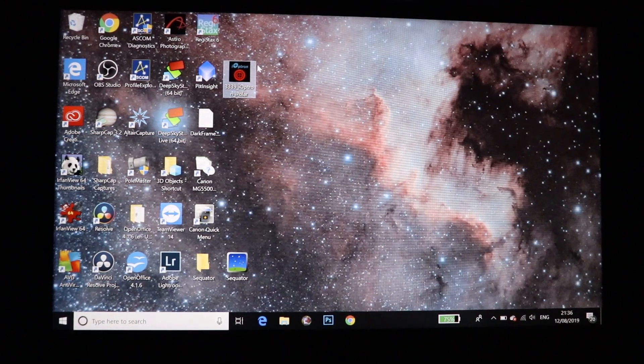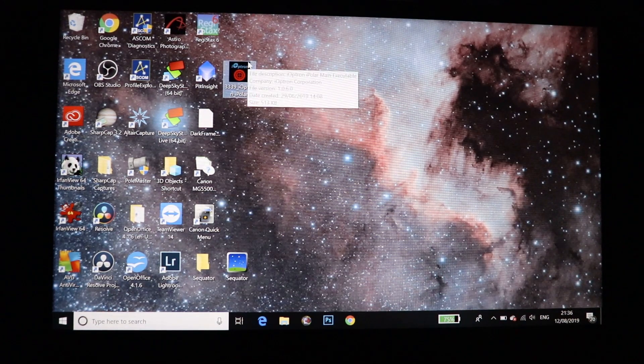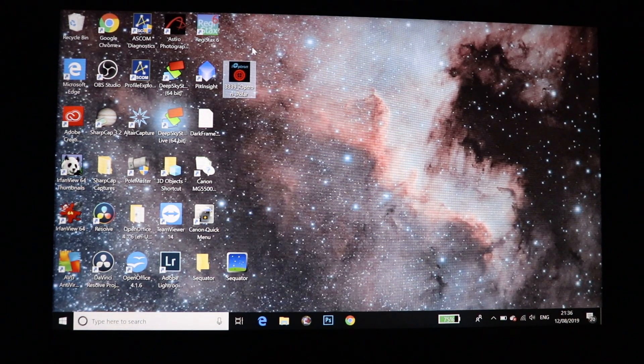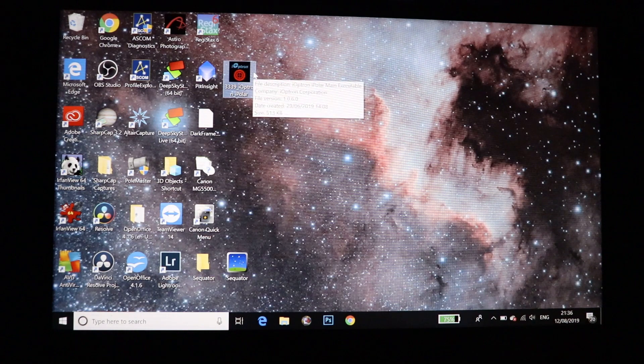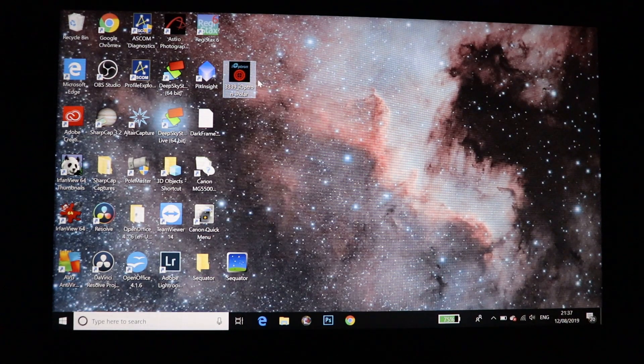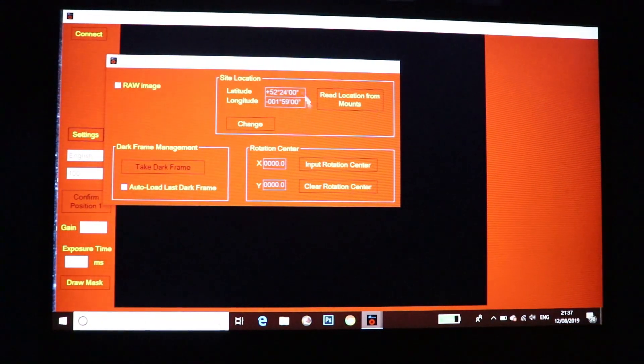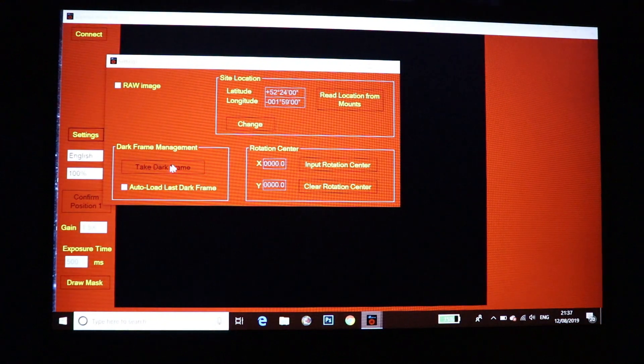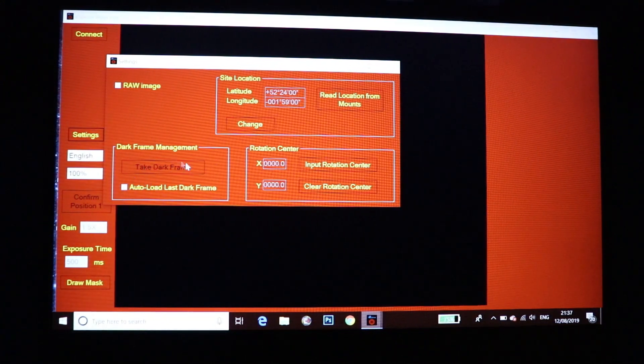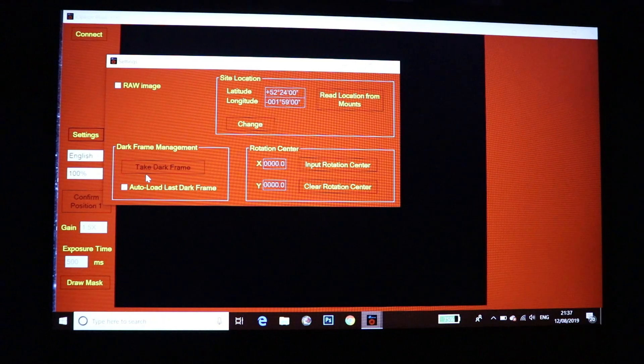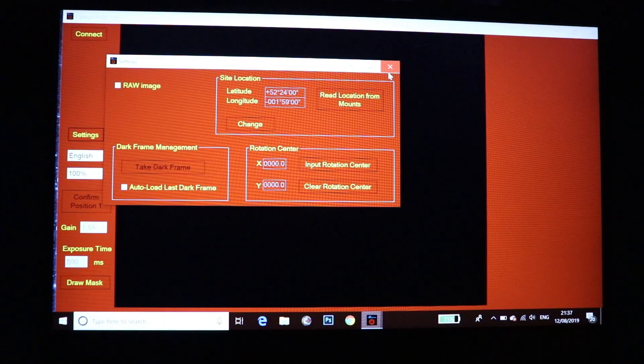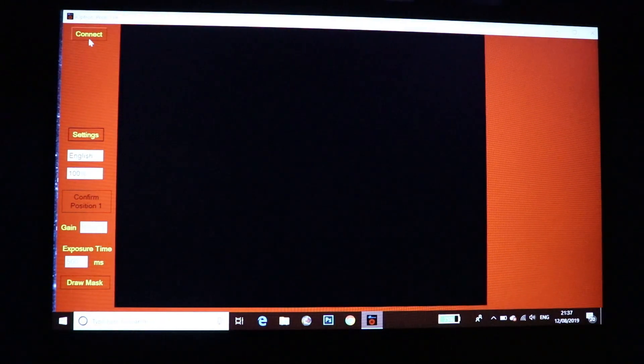In this latest video I'm going to show you how to polar align using the iPolar. So you need to download the iPolar software from the iOptron website first and then double click. Then go to settings and make sure you've input your location correctly and make sure you take a dark frame. I've already taken a dark frame, so I'm going to leave it as is. And then I'm going to click connect.